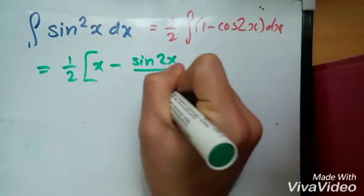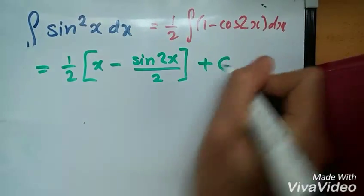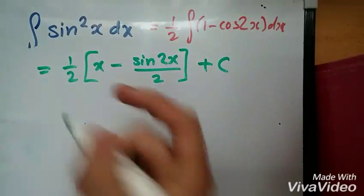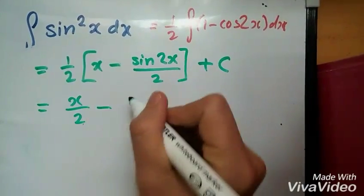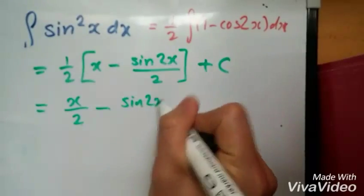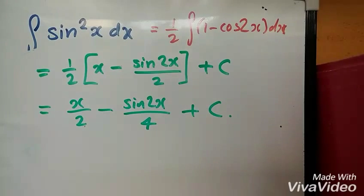Expand the bracket: ultimately you have x over 2 minus sine 2x over 4 plus c. And there we have it, folks. Nice and easy, hope this helps.